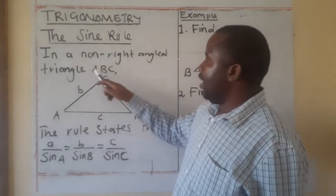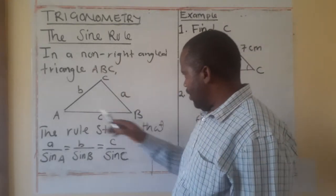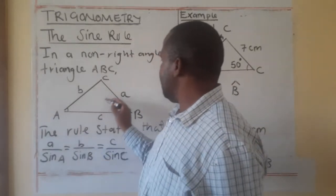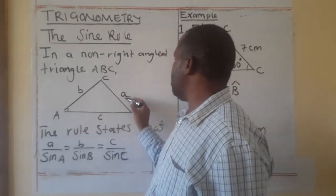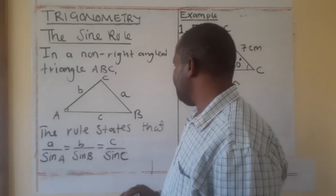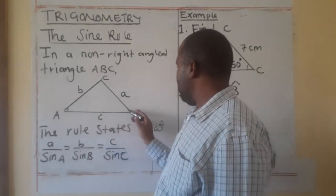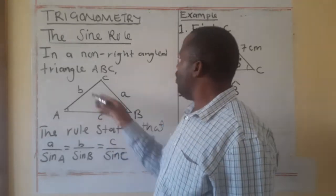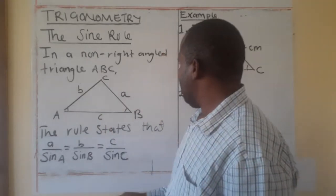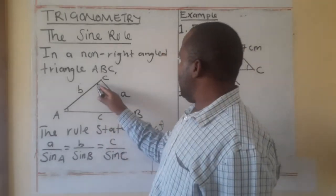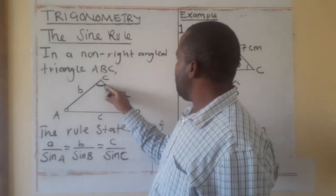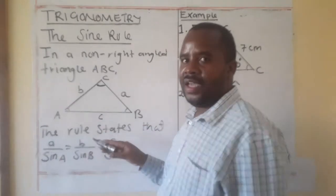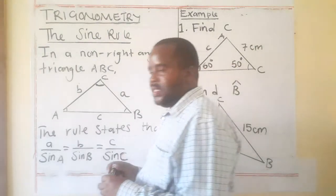In any non-right-angled triangle ABC, the side BC which is opposite angle A is labelled with small letter a. The side AC which is opposite angle B is labelled with small letter b. And the side AB which is opposite angle C is labelled with small letter c.